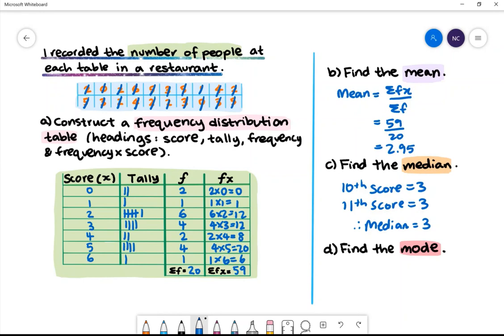Part D: Find the mode. The mode is the most frequent score. The most frequent score in our case is the number 2. Therefore, the mode is 2.